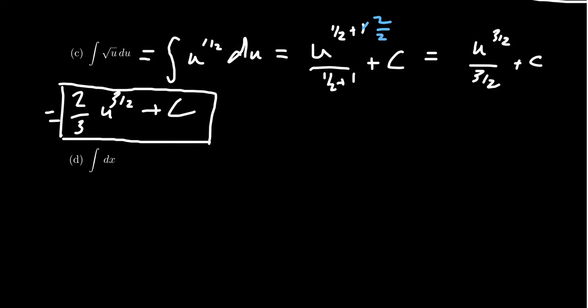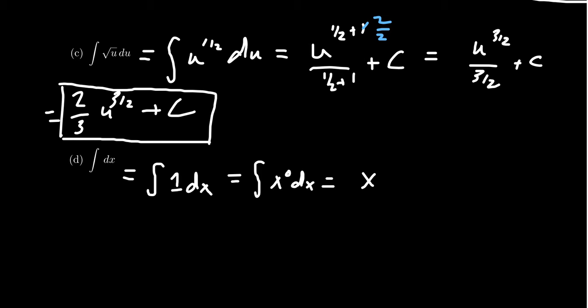For the last example here, it looks like there's no function — but we saw this same situation when we dealt with derivatives. There is a function; it's just the function one, since multiplication by one is implied. One is still a power function because it's x to the zero. By the anti-power rule, increase the power by one to get x to the first, and divide by one. So we end up with x to the first over one plus c, which is just x plus c.